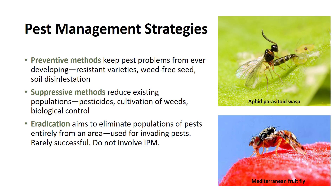Two or more suppressive methods are often combined to enhance control. Eradication strategies, in which no pests can be tolerated, are aimed at totally eliminating the pests from a designated area. Eradication has the appeal of offering a complete solution and in special instances may be a desirable strategy. Newly invading exotic pests posing a health or severe economic threat are the usual target of eradication programs. Coordination of eradication efforts is usually the responsibility of government agencies. Examples of this approach are efforts directed at eliminating the Mediterranean fruit fly in Florida.